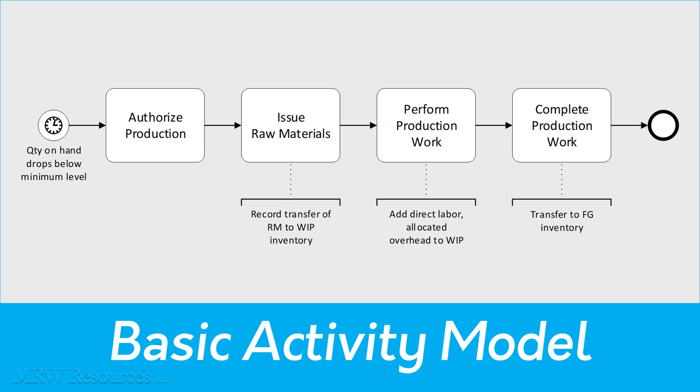As always, we can start with a basic or simple BPMN activity model. We know that we need to authorize production of new goods when we run low on inventory. From there, raw materials must be issued into the production process where the work is performed. When the work is completed, we now have new finished goods that we can then turn around and sell.